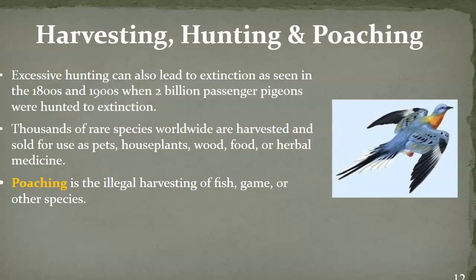The third cause is harvesting, hunting, and poaching. Excessive hunting can obviously lead to the extinction of a particular species — the passenger pigeon was hunted to near extinction in the 1800s and 1900s. We have thousands of rare species worldwide that are harvested and sold as pets or for use in herbal medicines. We have protected species, but people engage in poaching — the illegal harvesting of fish, game, or other species. Elephants have some refuges in Africa where poaching is prohibited, but people are always trying to circumvent these rules.